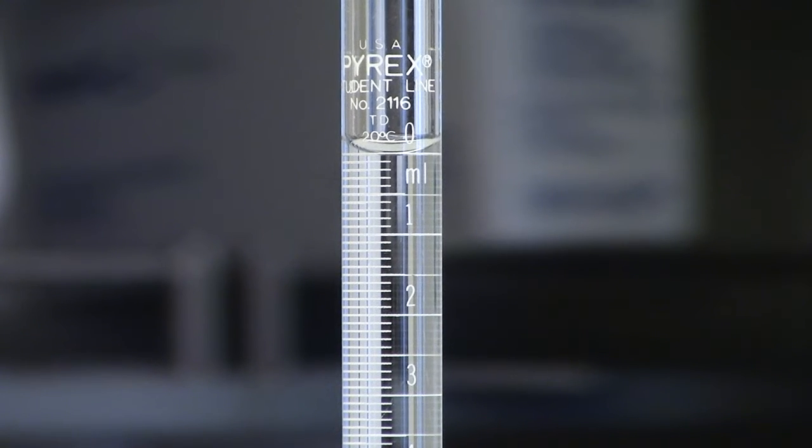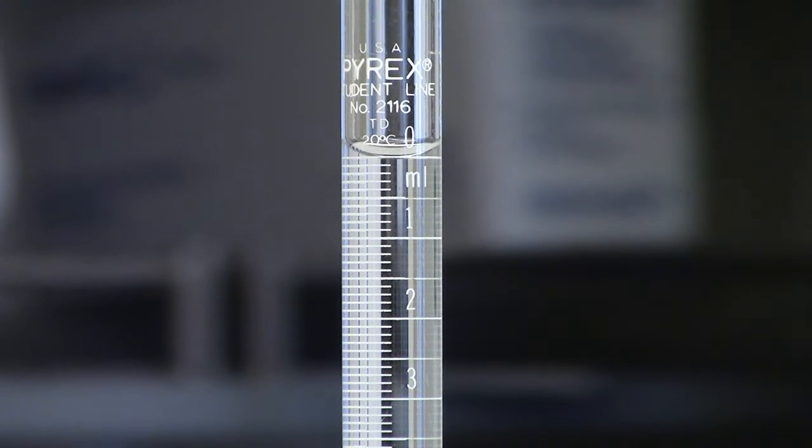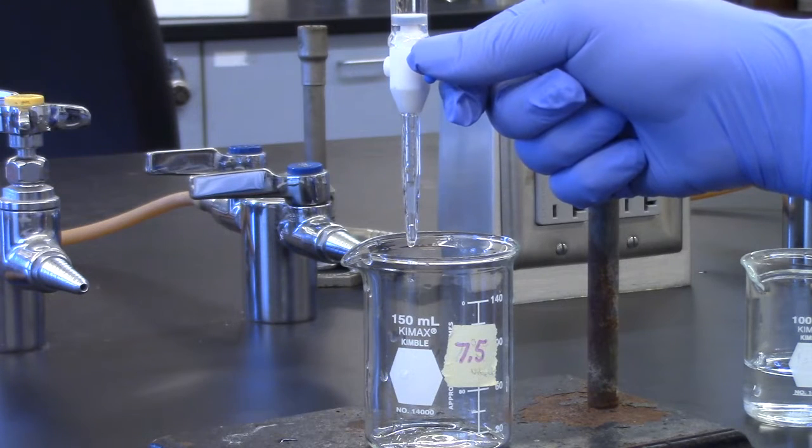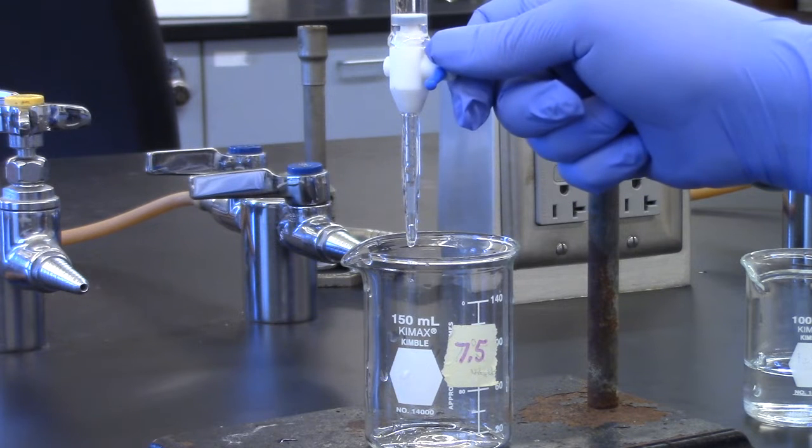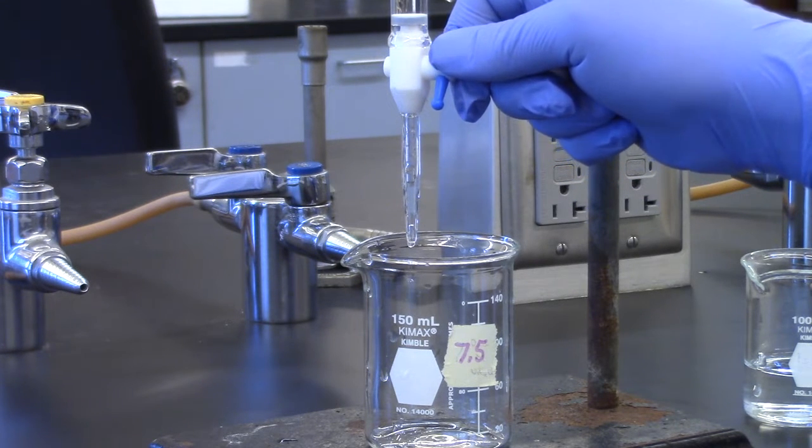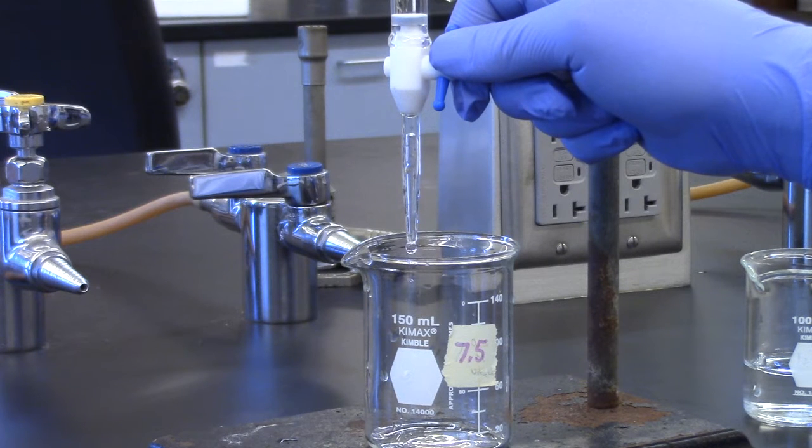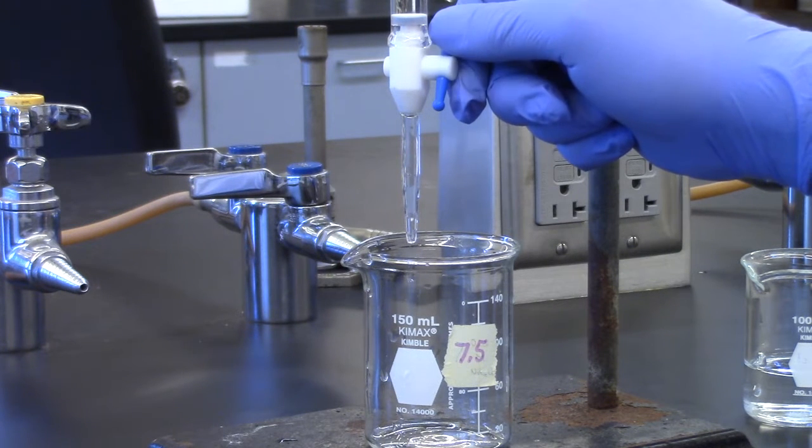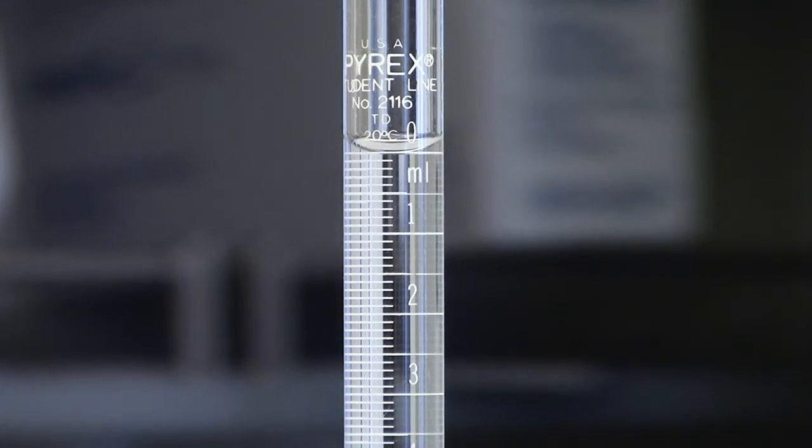Fill burette with distilled water to the zero mark. Inspect the tip to be sure that there is no air in it. If there is air in the tip, open the burette to get rid of the air and fill the tip with water. Refill burette to the zero mark.